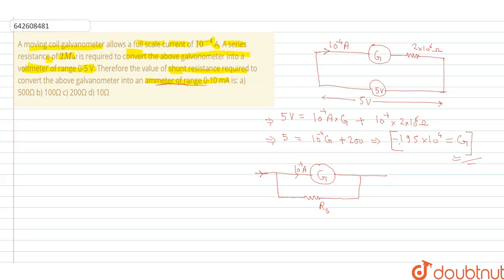ammeter is 0 to 10 milliampere, so 10 milliampere we will supply here. This is the maximum current for galvanometer, and the current for the shunt will be 10 milliampere minus 10 to the power minus 4 ampere.